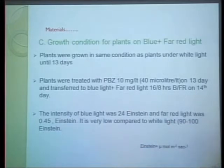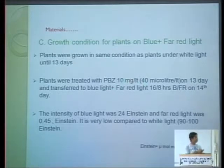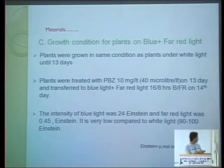For the blue and far-red light experiment, plants were sown on trays, kept in the dark room, returned to short-day conditions until day 13. On day 13, Paclobutrazol was applied, and on day 14, they were moved to the blue and far-red light chamber. The intensity of blue light was 24 µmol/m²/s and far-red light was 0.45 µmol/m²/s — very low intensity compared to the white light at about 100 µmol/m²/s. Blue light duration was 16 hours and far-red 8 hours.